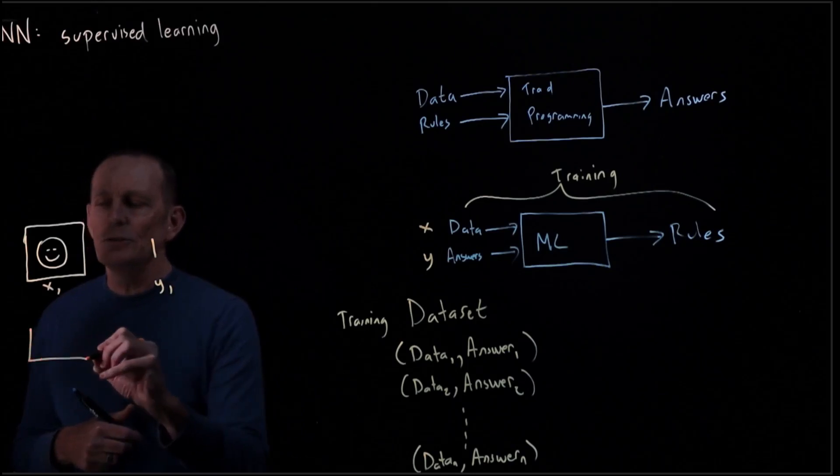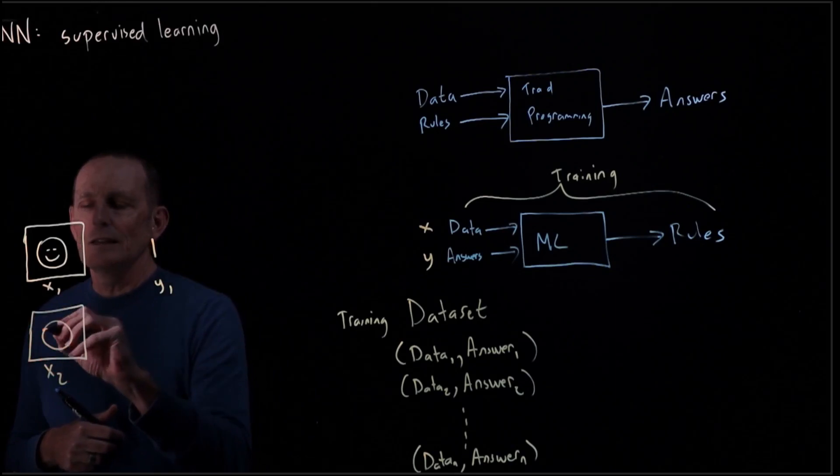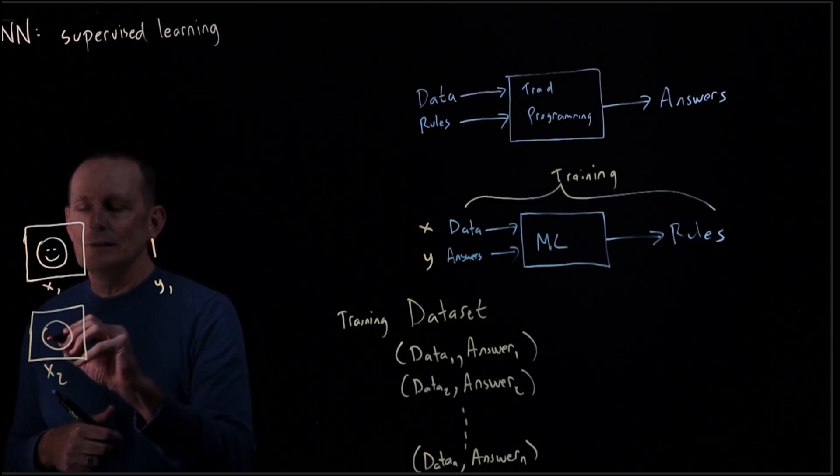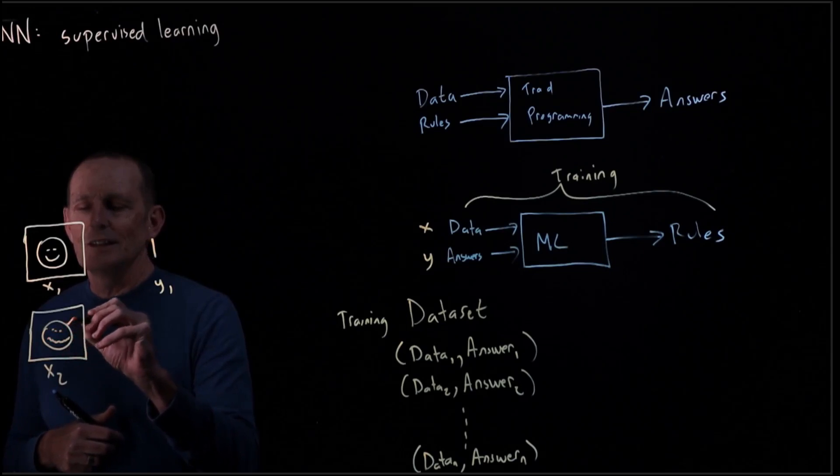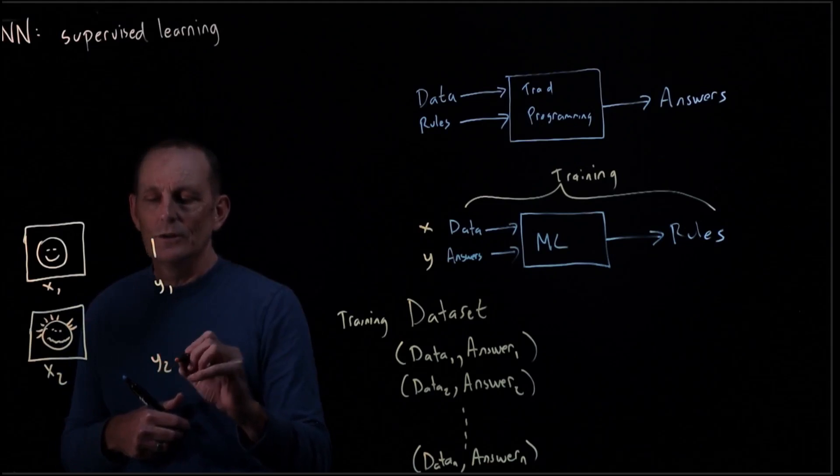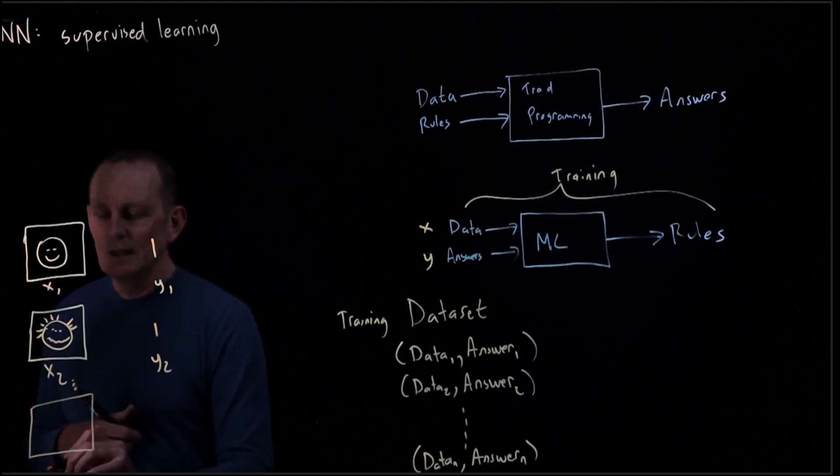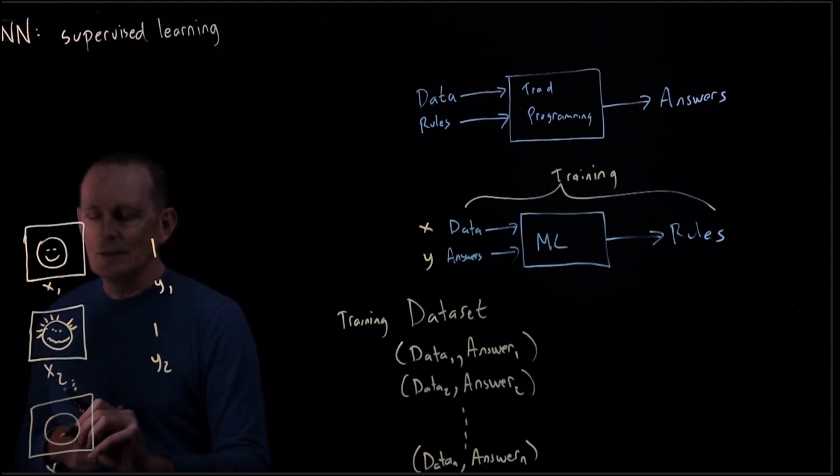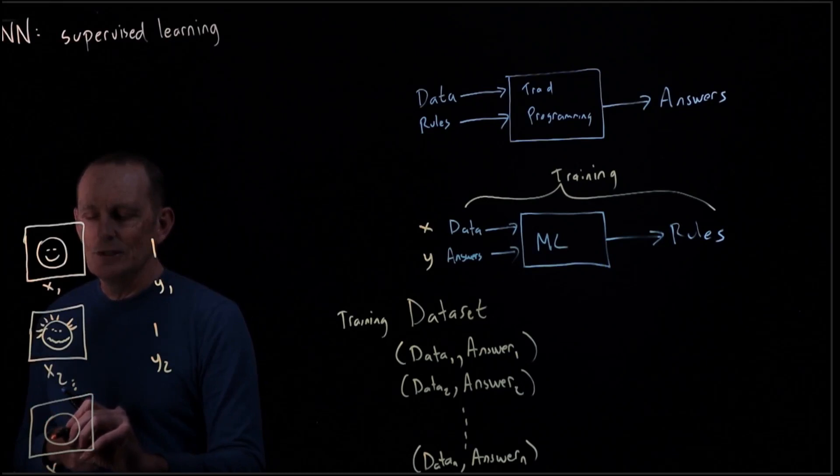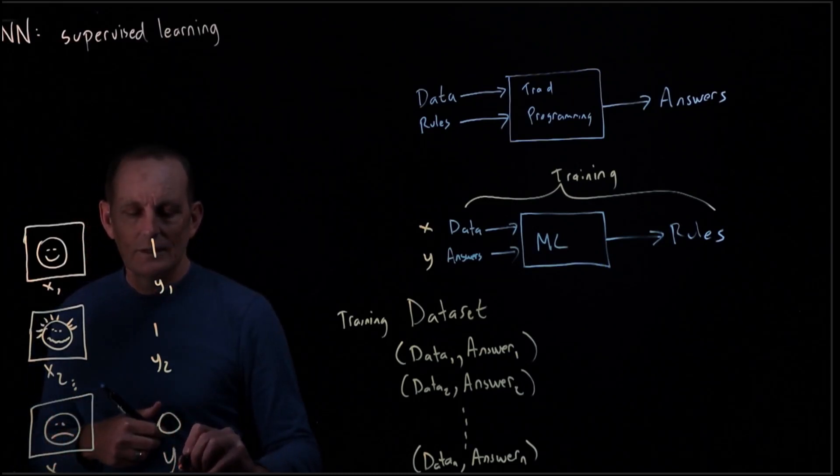And similarly, x sub two is, let's say, a different happy face, and here this is also a one. And then we have another instance, we have a bunch of instances. Our last instance is something like this, which is sad. And this is y sub n.